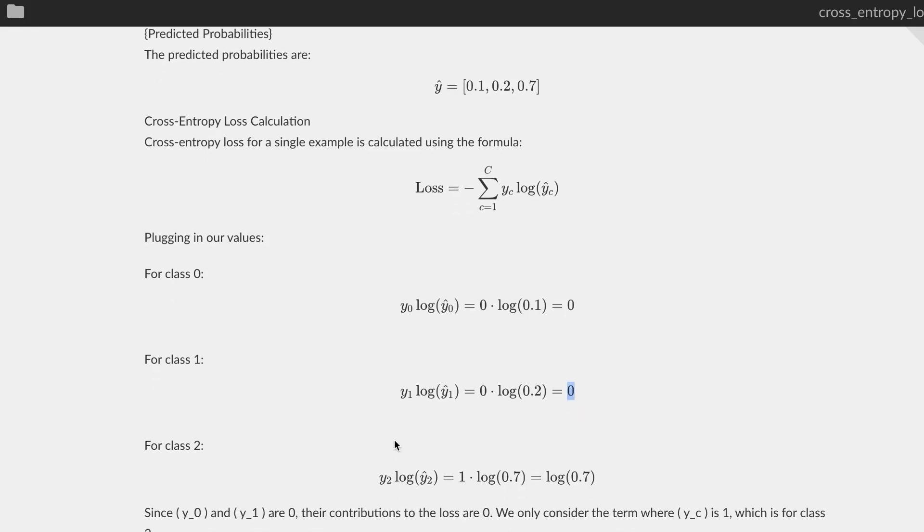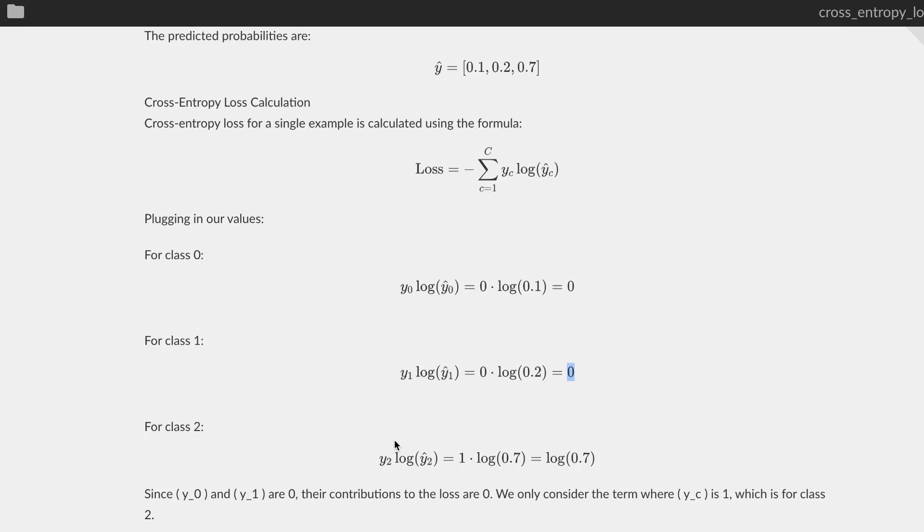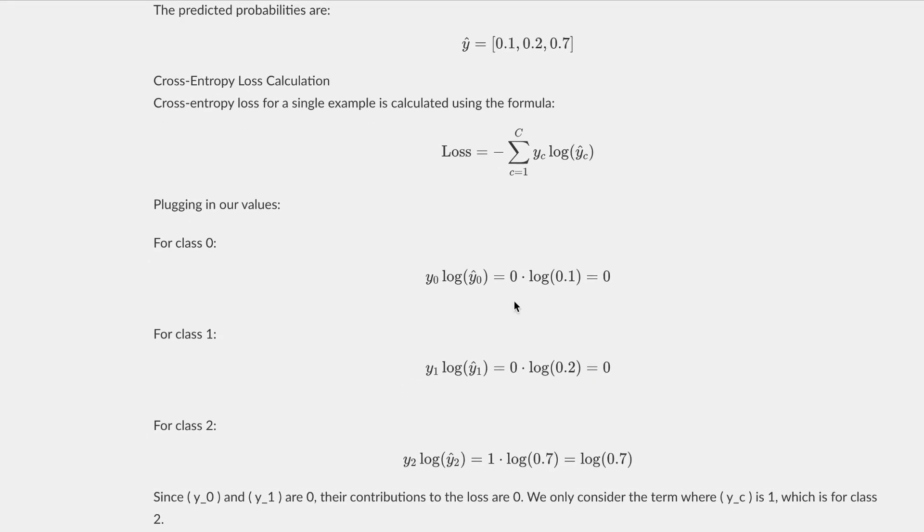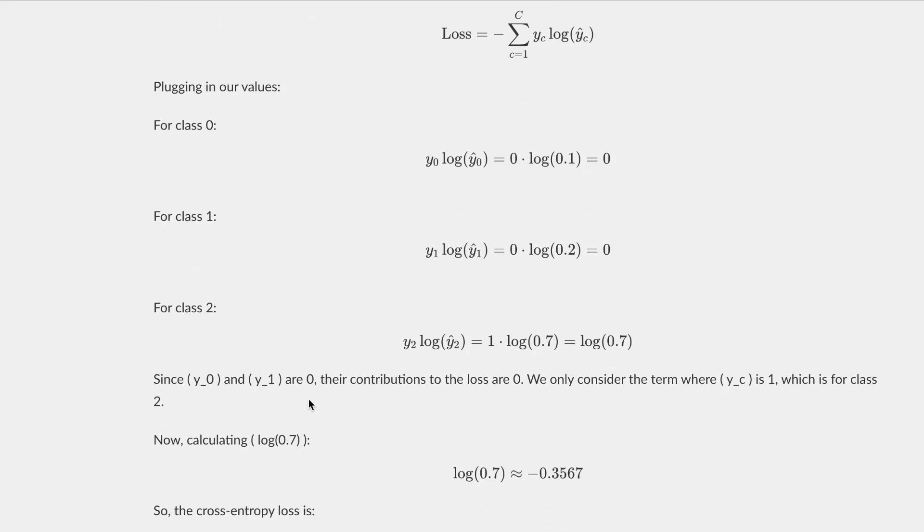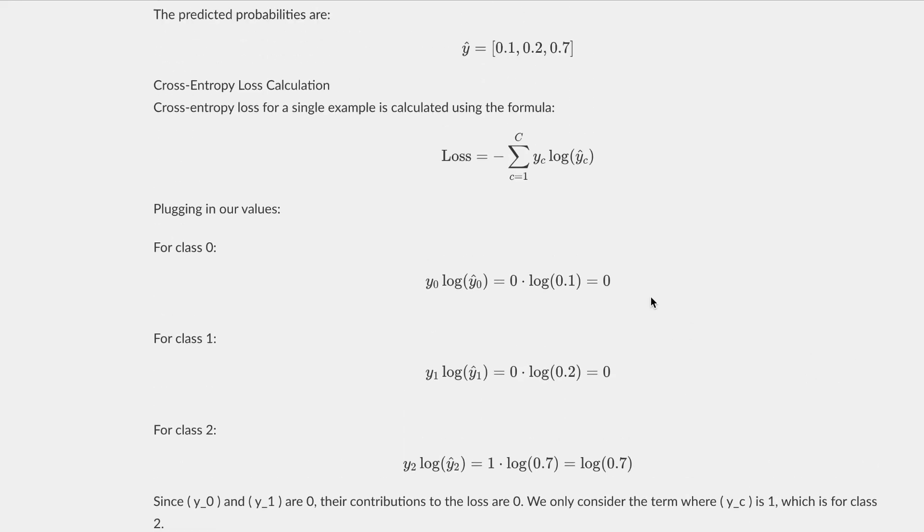Now for class two, which is the correct class, which is entertainment, we do one, which we get from over here, times log of 0.7. So this is going to give us log of 0.7. Since y0 and y1 are zero, their contributions to the loss are zero. We only consider the term where the yc or y correct is one, which is for class two in this category.